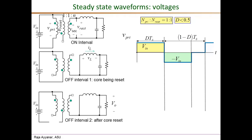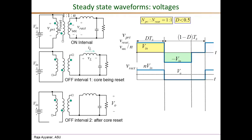This waveform applies to all windings scaled by the turns ratio. For our choice of N_primary to N_reset equal to 1:1, the waveform is identical for V_reset as well, as long as V_reset is defined positive at the dotted end. Similarly, V_secondary has the same wave shape but scaled by the turns ratio N, so V_secondary equals N times V_in, or equivalently this waveform is the waveform of V_secondary over N.